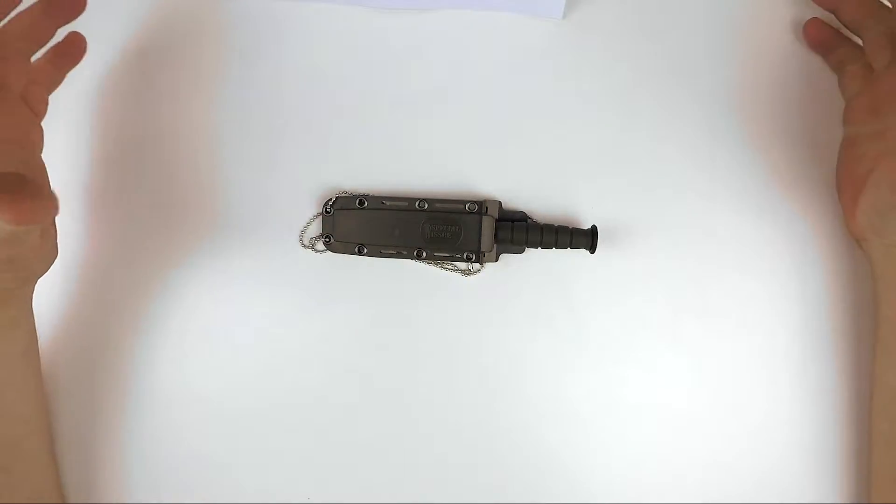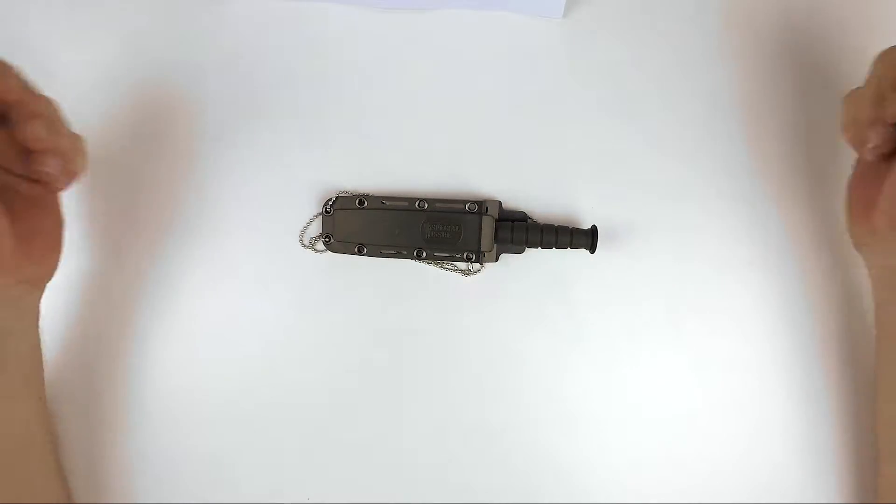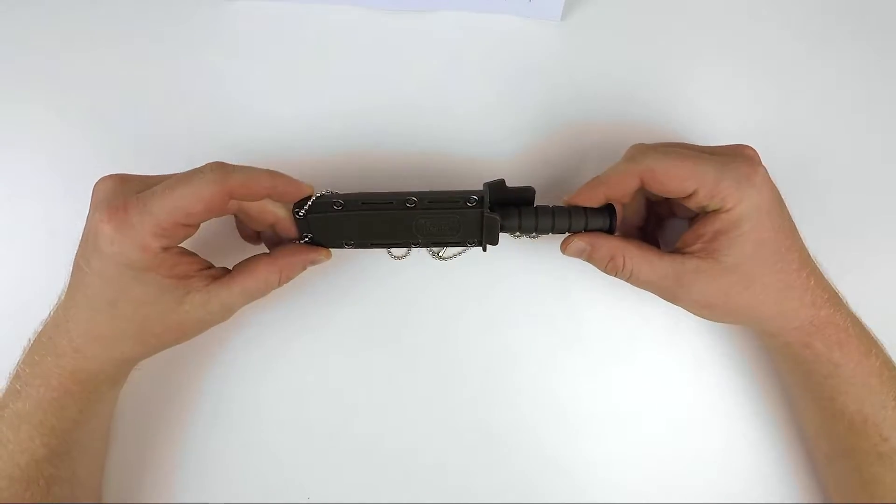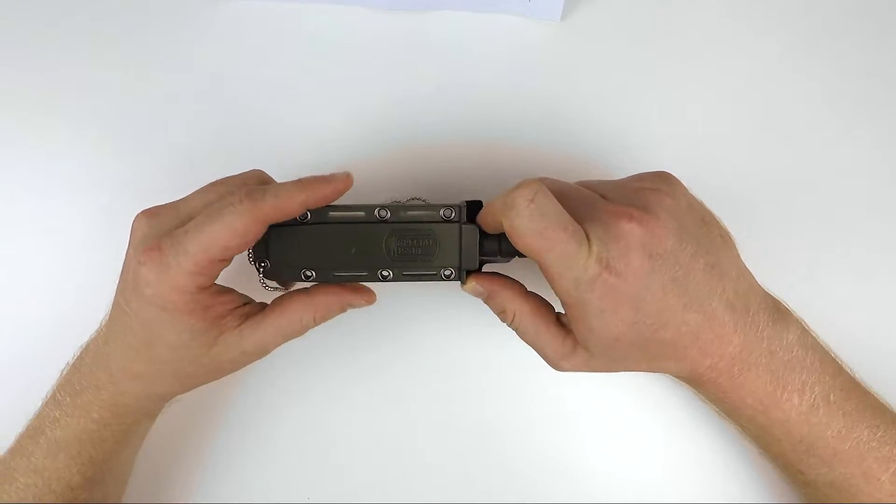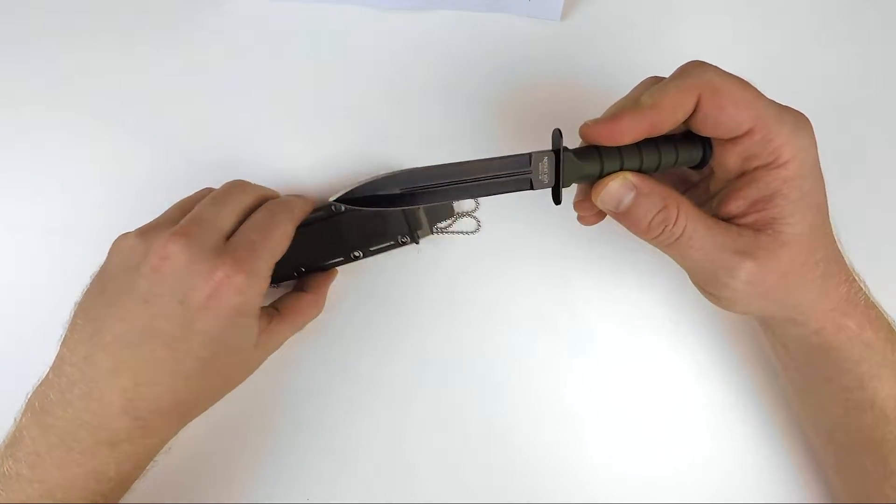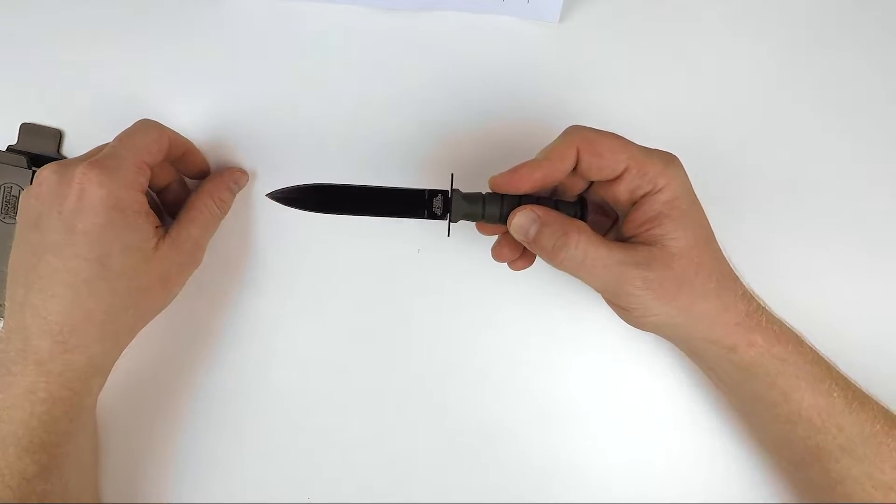G'day everyone, it's Alex here from X-TAC Australia. Today I'm going to be showing you the Emtek Small Kabai. This is a double-edged neck knife and it's really interesting. This is essentially a miniaturized combat knife, so it's really different for a neck knife. I'm just going to put the sheath over here for now. Have a look at this little beauty.